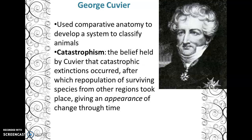According to Cuvier, the organisms that survive a catastrophic event repopulate the area and take over, and that gives the appearance of change through time. There wasn't exactly gradual change — some crazy event happens which causes a big change all at once, and we see that change immediately after. Cuvier did not support the same theories of evolution as Darwin and other scientists did. He was the first scientist to propose the idea of mass extinctions, but that ultimately did not carry directly into Darwin's theory of evolution — it kind of helped shape it, but not completely.